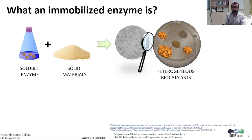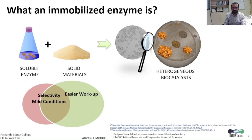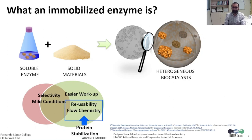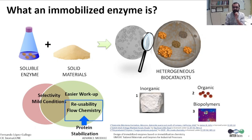If we smartly design the immobilization process, we can select the material and the surface chemistry so we can increase the protein stability, making the heterogeneous biocatalysts more stable. By doing so, we can harness the best properties of the biocatalysts — the selectivity and the enzyme capacity to work under mild conditions — but also we can harness the best properties of heterogeneous catalysis, as the biocatalysts can be reused and integrated into a variety of reactors, including flow reactors for continuous operation.